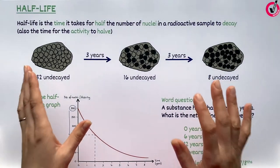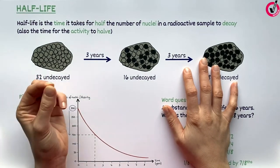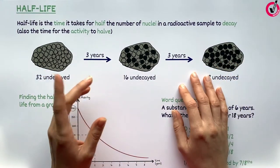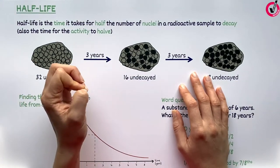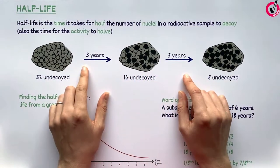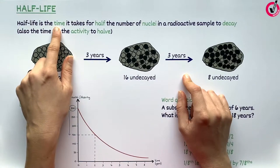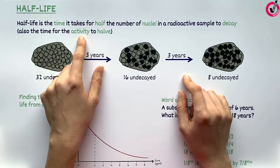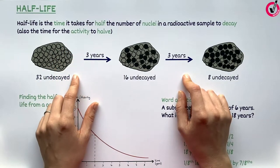We've already said that nuclear decay is completely random, and there's no way of knowing when a particular unstable nucleus will emit radiation. However, the really cool thing about radiation is that we do know exactly how long it will take for half of the unstable nuclei in a sample to decay, and this is called the half-life. It's also the time it takes for the activity of the sample — the amount of radiation given out per second — to halve.